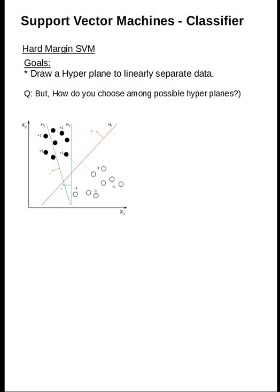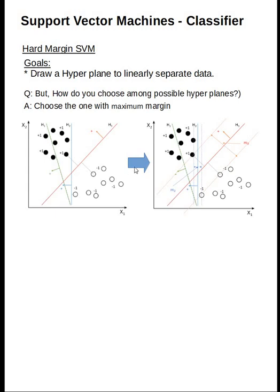One obvious answer is to choose the one with the maximum margin. We need to look at the margins of each of those lines or hyperplanes and choose the one which has the maximum margin. In this particular example, the margins have been shown for both the blue line and the red line, and it is very obvious that the margin for the red line is larger. Therefore, one possible solution for this case is the red line as the separating hyperplane.